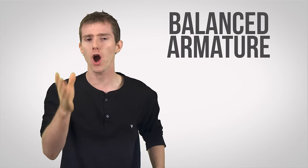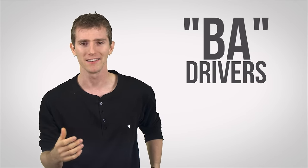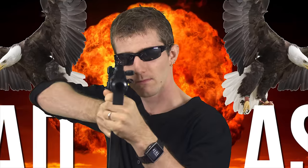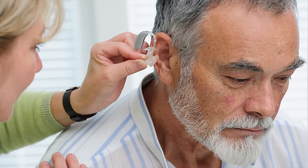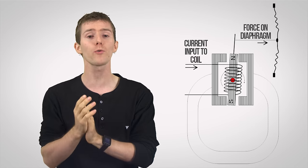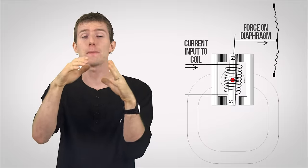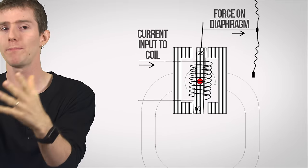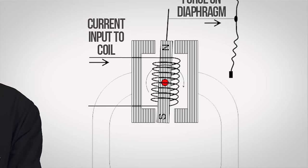The final type that we're highlighting today is balanced armature, or BA drivers. They're the smallest ones available, and they're incredibly power-efficient, which makes them great for IEMs, also known as canal phones, and for hearing aids, actually. This driver type features a coil-wrapped armature that is pivoted, and then perfectly centered, or balanced, between the poles of a permanent magnet.